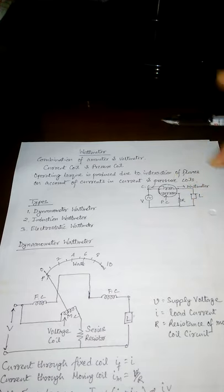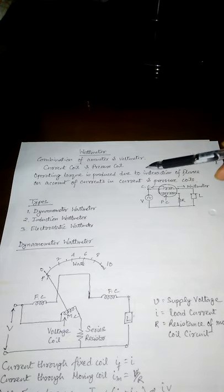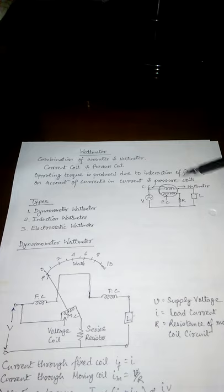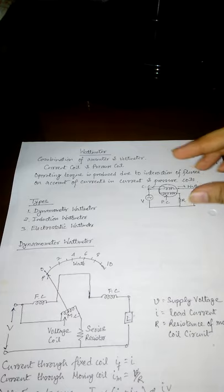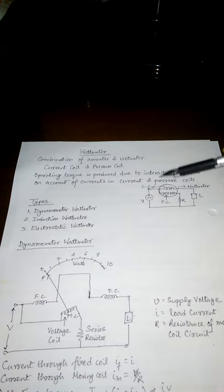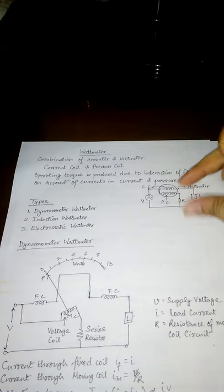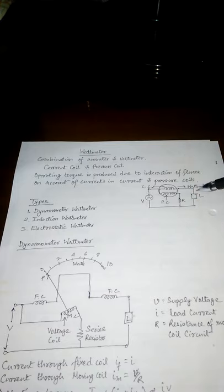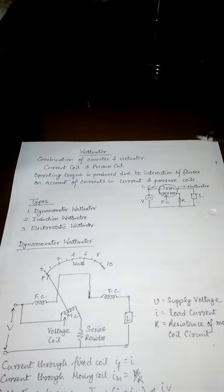In the Wattmeter principle, the operating torque is produced due to the interaction of flux on account of currents in the current coil and pressure coil. In the current coil, the current is proportional to the load current, and in the pressure coil, the current is proportional to and in phase with the voltage. As these are coils, current flowing through them creates magnetic fields, and the interaction between these magnetic fields produces the resultant operating torque.